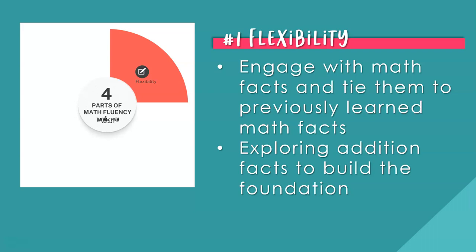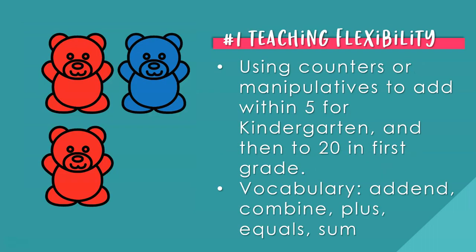Part one of addition fluency is flexibility. Having flexibility teaching math facts happens when students interact with addition to develop conceptual understanding. Students are exploring addition facts to build the foundation of math fluency. Teaching flexibility for addition fluency is using counters and manipulatives to add within five for kindergarten and then to add to 20 in first grade. For example, adding two red bears and one blue bear gives three bears in total. By using manipulatives, it helps students start to develop a concrete understanding of each number being added. This is also a great time to introduce terms such as add, combined, plus, equals, and sum. Students need to be introduced correctly to these terms to develop an appropriate understanding of addition.